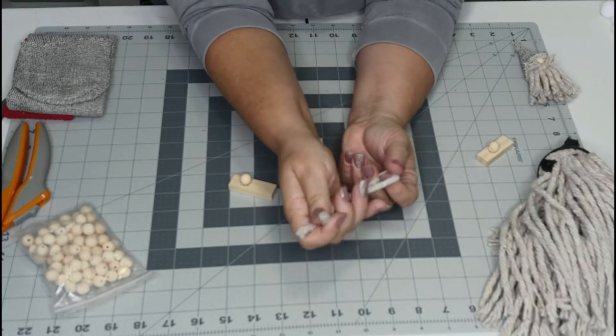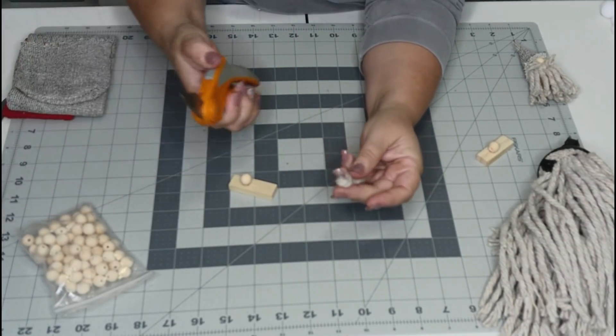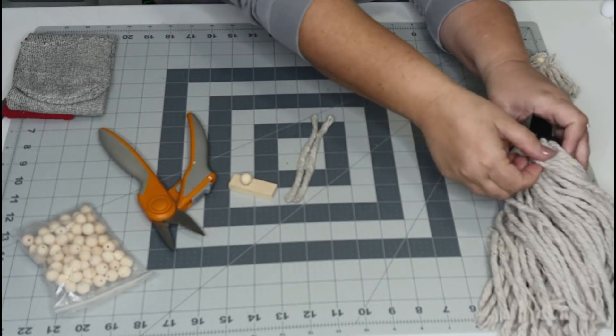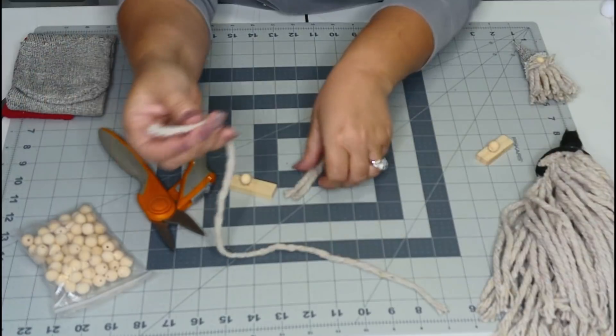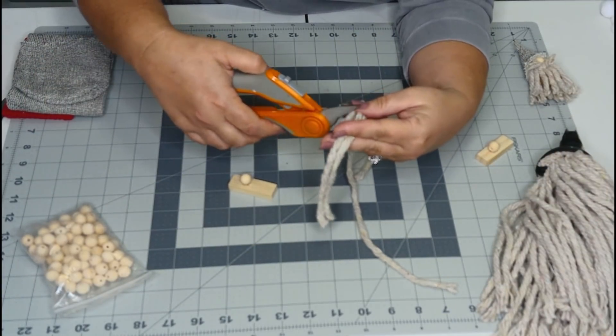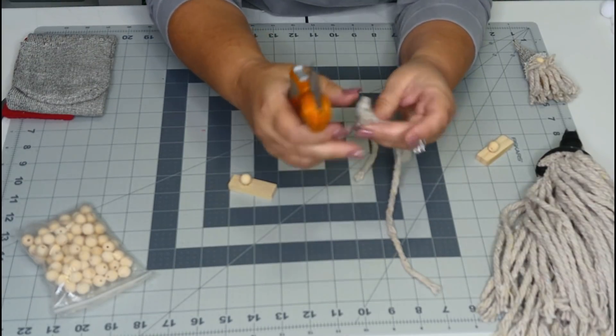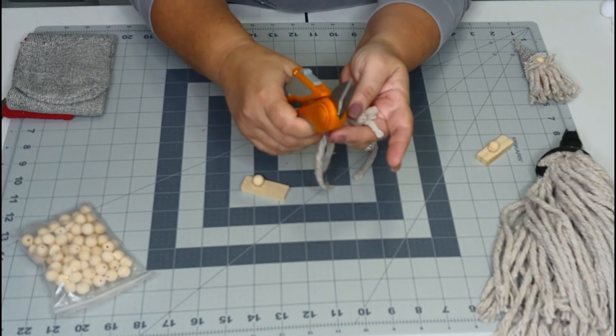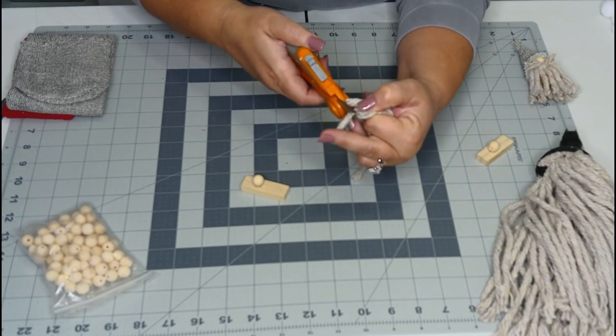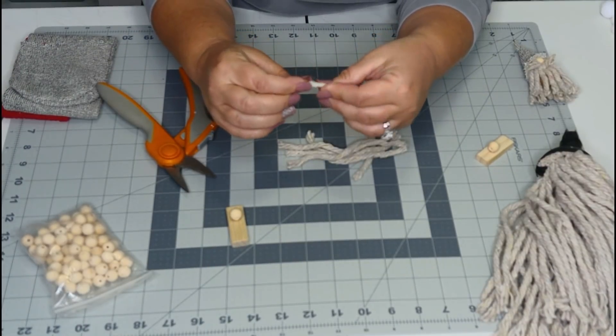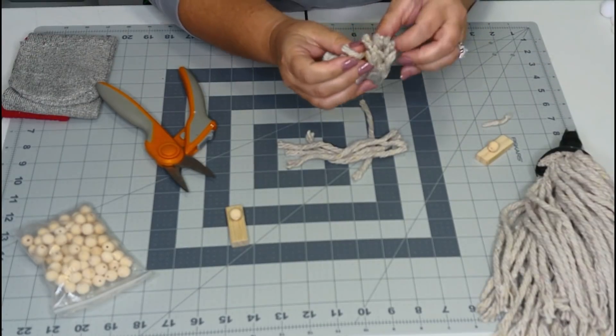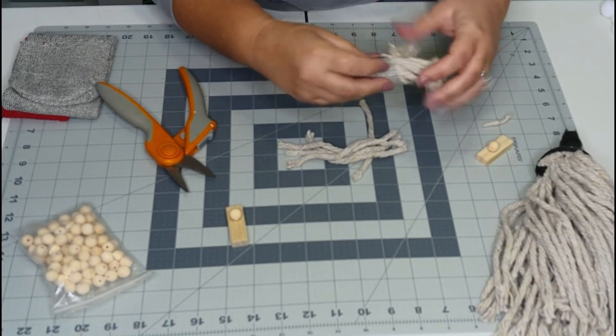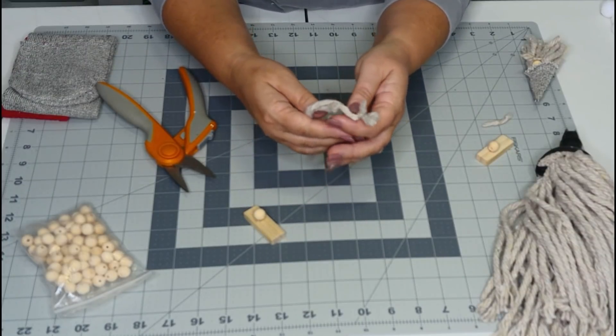The first thing that we want to do is to figure out how long we want our little beard for our gnome. I want mine to hang down slightly from my side piece of my Jenga block, so I'm just going to kind of eyeball it. I'm just going to go cut them in half, that way that'll make life easy. I'm going to use my Fiskars easy action scissors.